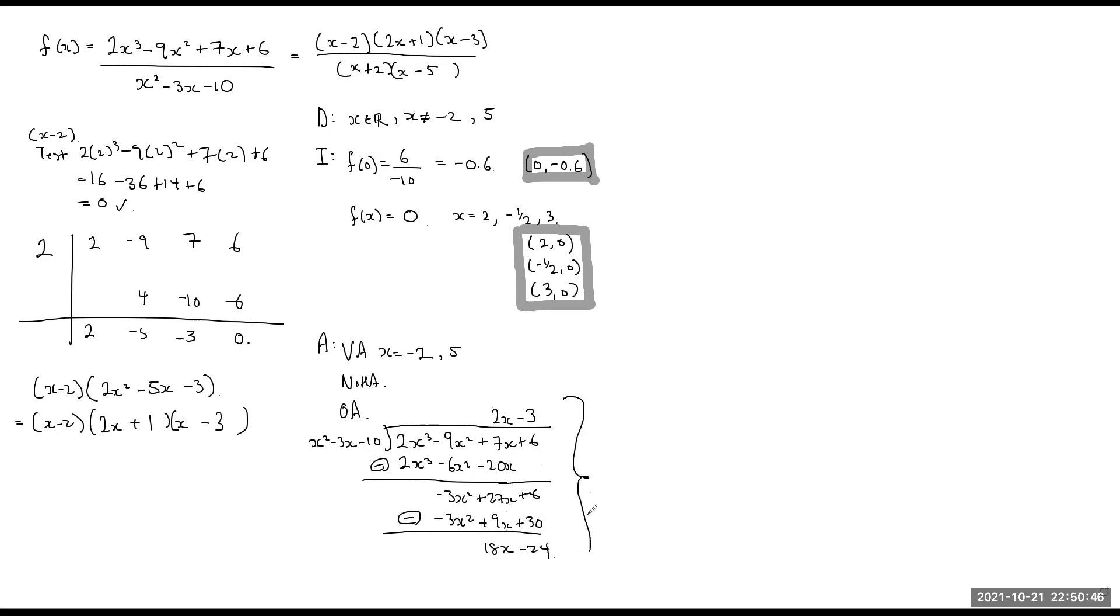So putting all that together, f of x can be rewritten as a linear function, 2x plus 3, with a little remainder, and the denominator is x squared minus 3x minus 10.